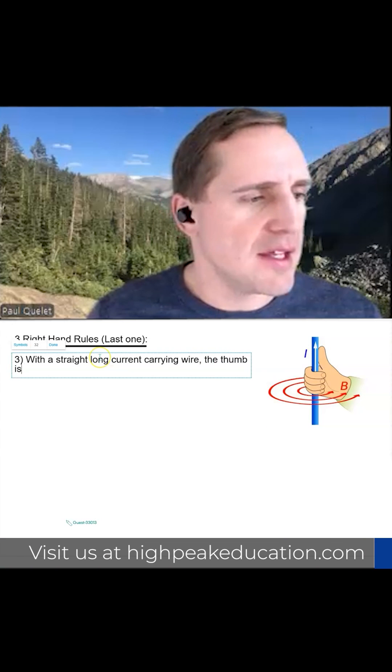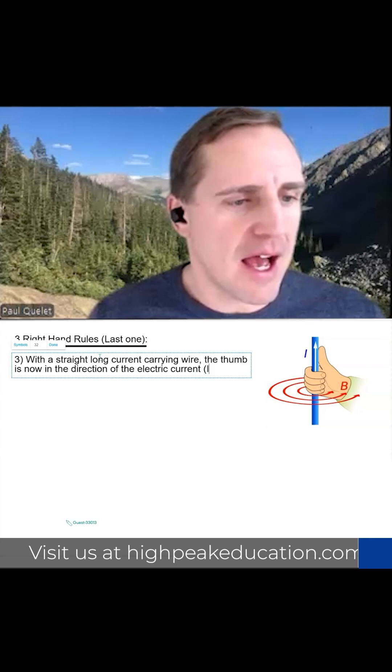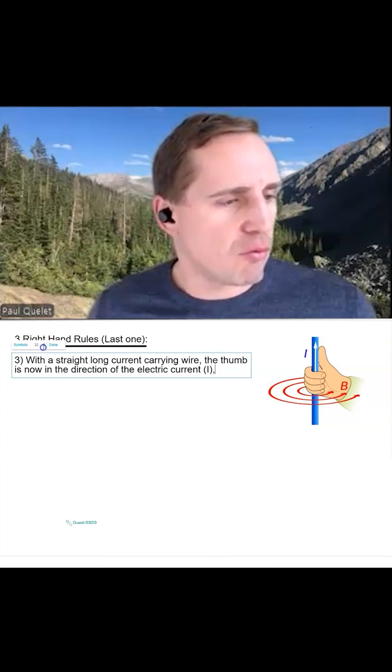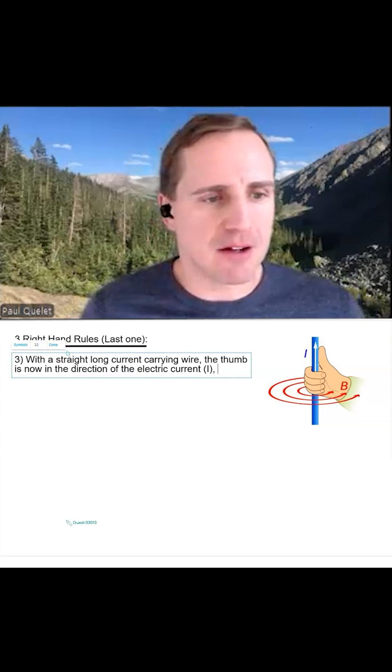The thumb is now in the direction of the electric current, that's I. And then the right-hand rule fingers wrap in the direction of the magnetic field.